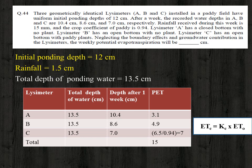Adding the three potential ET values: 3.1 + 4.9 + 7 = 15 centimeter. The weekly potential evapotranspiration is the average of these three, giving 5 centimeter.